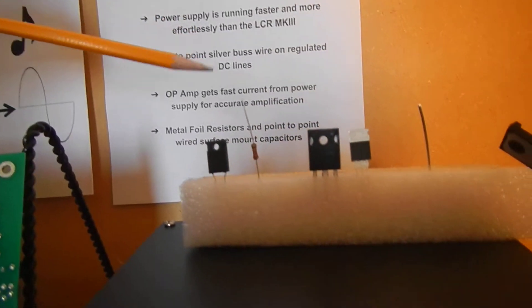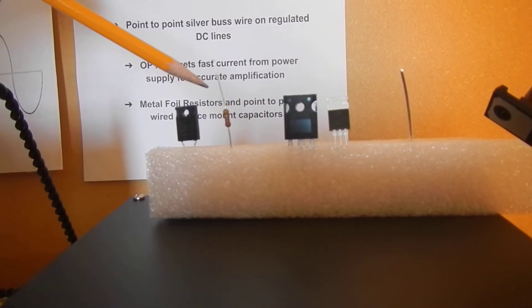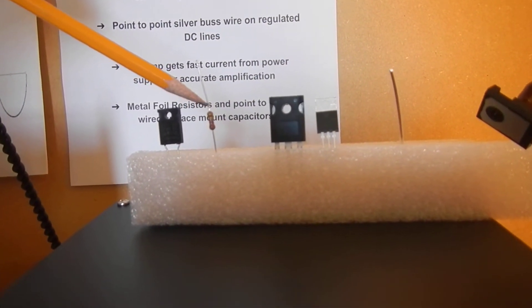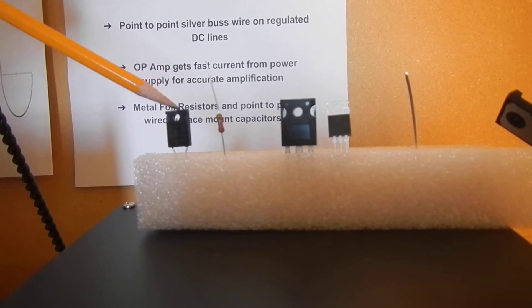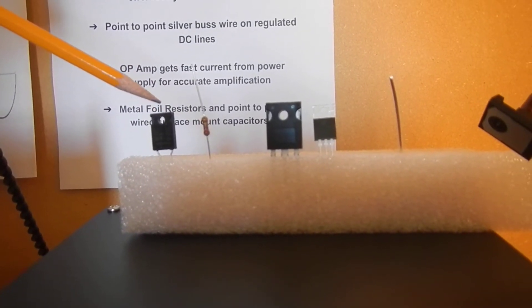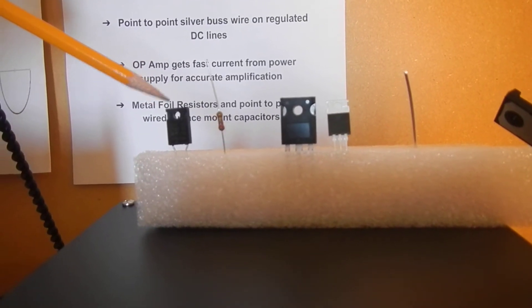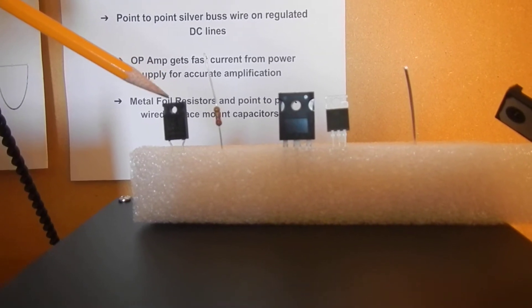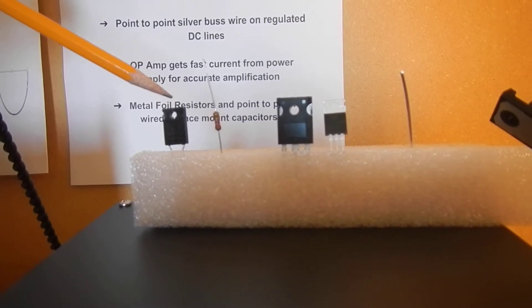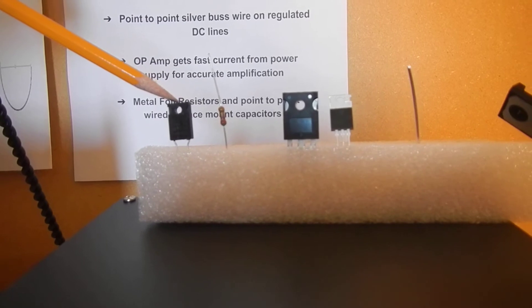We did this by overrating the components. This is a snubber resistor in LCR Mark III. This is the same snubber resistor in LCR Gold. As you can see, it's a much larger component. It's a much higher current capacity component. It's also a better quality resistor all around.